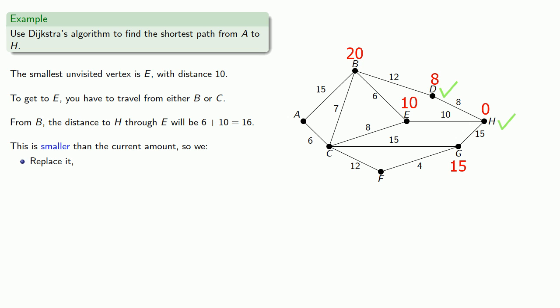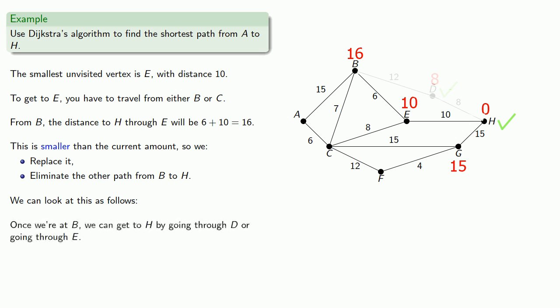Now the sign saying distance to H at B now reads 16. Also, the original path we had to H, because it's a longer path, we can eliminate it from consideration entirely. We can ignore this path from now on. The way we might look at this is the following: once we get to B, we can get to H by either going through D or through E. But going through E is shorter, so we'll ignore the path through D.